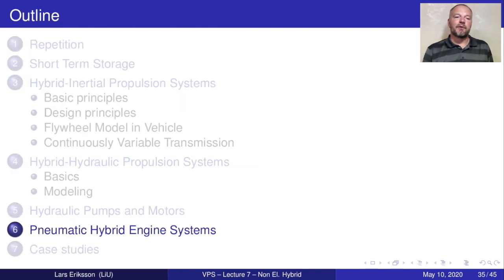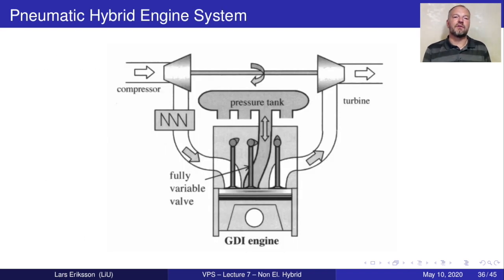The next concept that we will look at is pneumatic hybrid engine systems. In this case, we're storing energy by compressing gas inside a pressure tank. It's a little bit like the hydraulic system, but there is no hydraulic pump. Instead, the engine is used as the pump. This is a sketch of the pneumatic hybrid engine system that has been developed and tested at Swiss Federal Institute of Technology under the supervision of Lino Guzzella and co-workers. Here are a gasoline direct injected engine, so the fuel is injected directly into the cylinders so that fuel won't enter into the pressure tank that is connected to the cylinder. You have the intake valve, you have the exhaust valve, and then you have another valve that is connected to a pipe leading to a reservoir where you can store the gas.